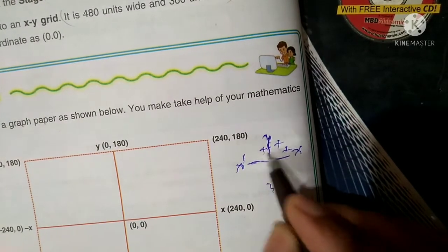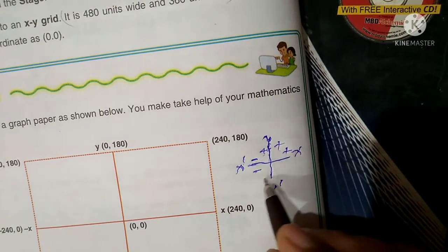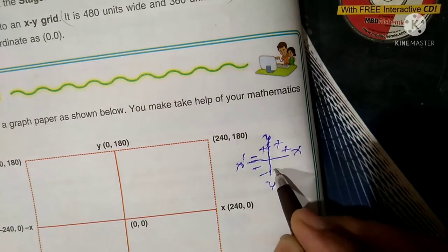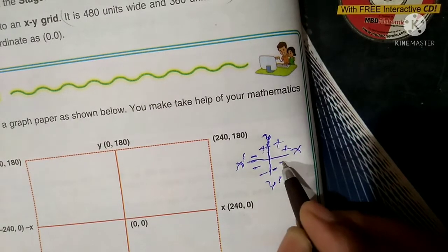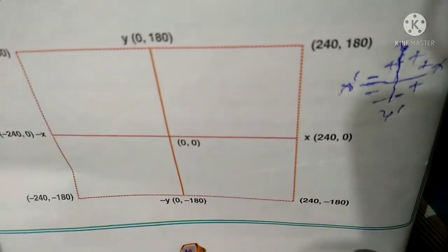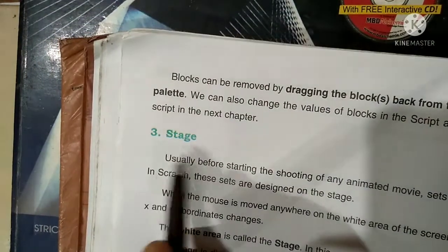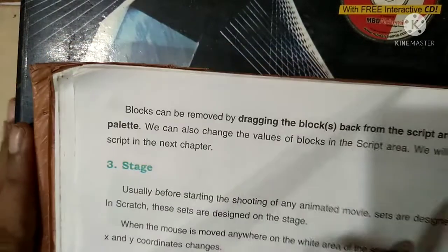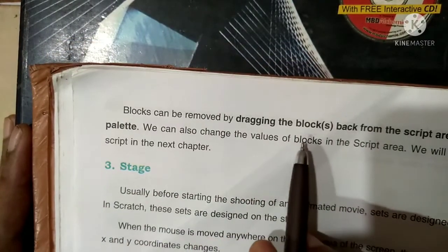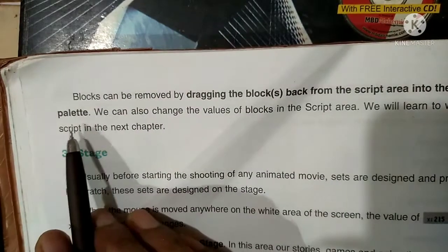In the x-dash direction, values will be negative, and here also negative. In the y-dash direction, this is negative but this is positive. The same thing happens in this figure. The third component is the stage. Blocks can be removed by dragging the block back from the script area into the blocks palette. We can also change the value of blocks in the script area.